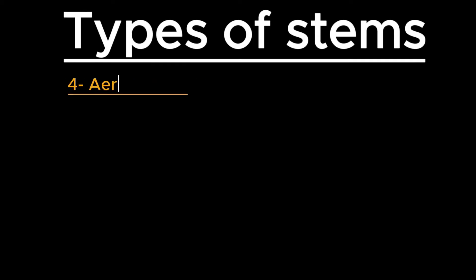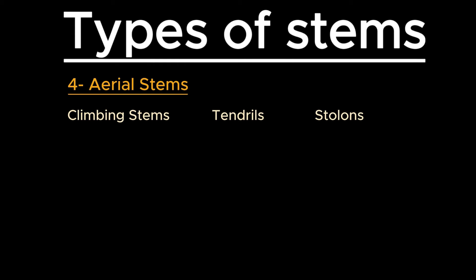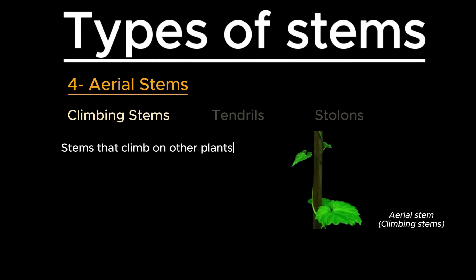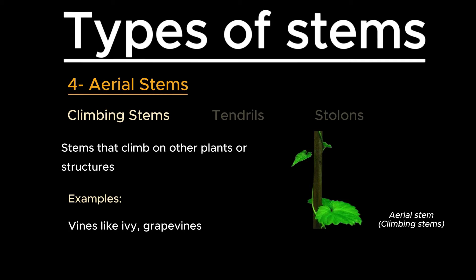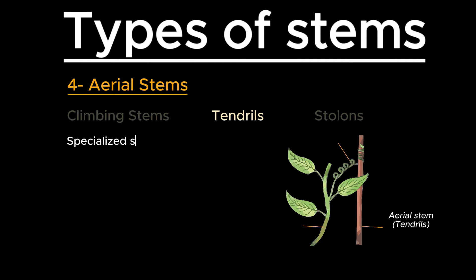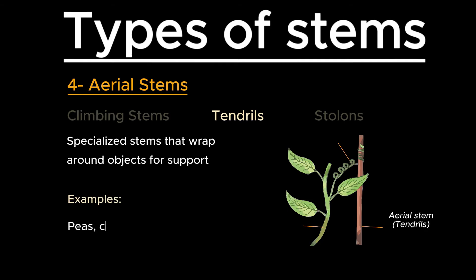Next we have aerial stems, which are divided into climbing stems, tendrils, and stolons. Climbing stems are stems that climb on other plants or structures, such as vines like ivy and grapevines. Tendrils are specialized stems that wrap around objects for support — examples include peas and cucumbers.